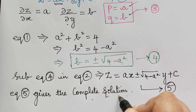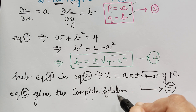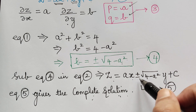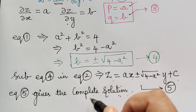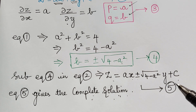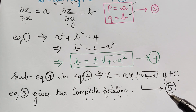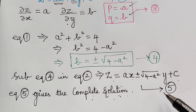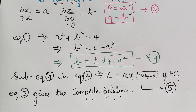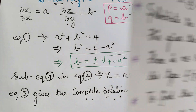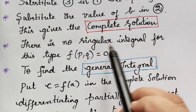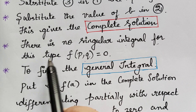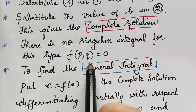You can say complete solution or complete integral. So z equal to ax plus or minus square root of 4 minus a squared times y plus c is the complete solution. The problem is not completed here — we have to find the singular solution and the general solution. But for f of p, q, there is no singular solution. There is no singular integral for this type, f of p, q is equal to 0.